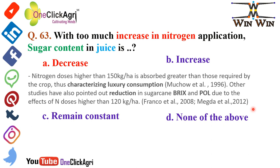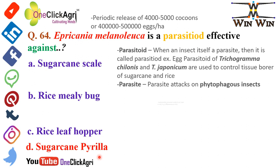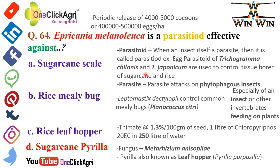Question 64: Epiricania melanoleuca is a parasitoid effective against sugarcane pyrilla. A parasitoid is an insect that is itself a parasite. For example, egg parasitoids Trichogramma chilonis and Trichogramma japonicum are used to control the tissue borer of sugarcane and rice. A parasite attacks phytophagous insects — phytophagous meaning insects or invertebrates feeding on plants.